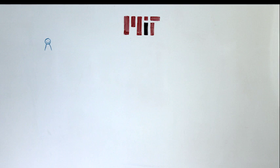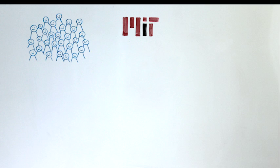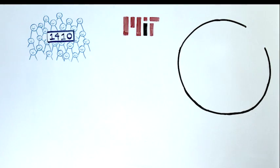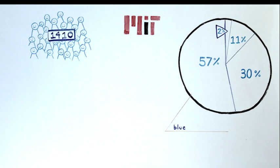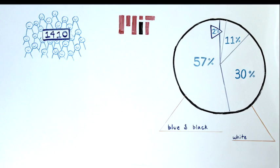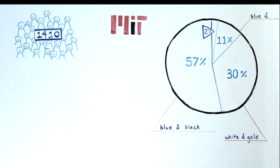In fact, a survey conducted at MIT concluded that of 1,410 individuals, roughly 57% of them saw blue and black, 30% saw white and gold, 11% saw blue and brown, and 2% perceived some other combination.